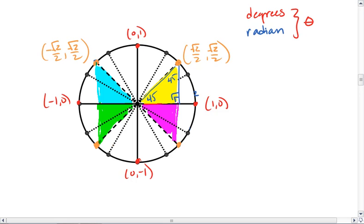In the bottom left, we're both to the left and below, so both values are negative. We get negative root 2 over 2, negative root 2 over 2.